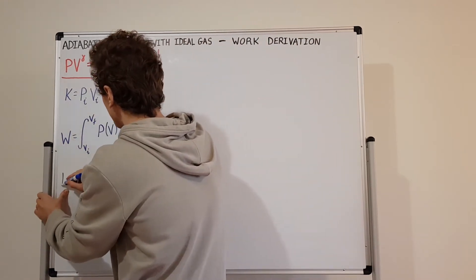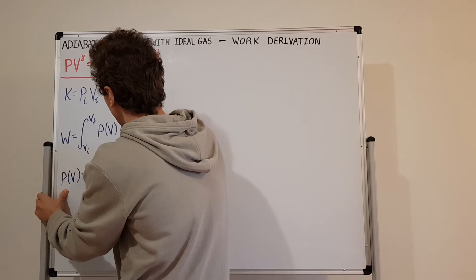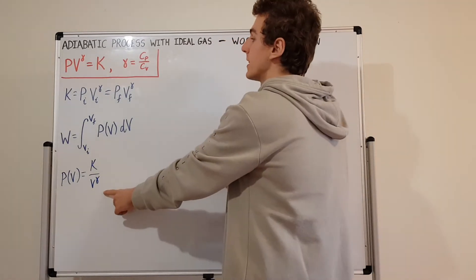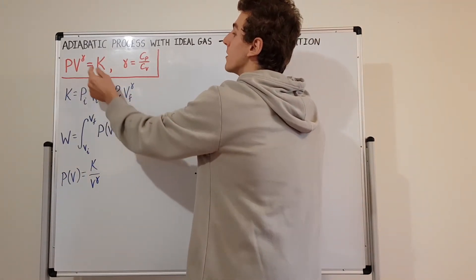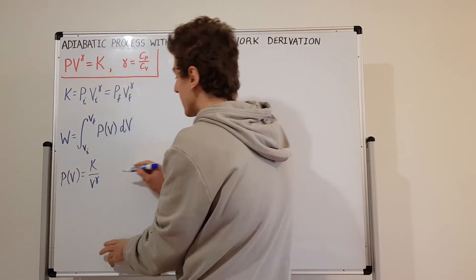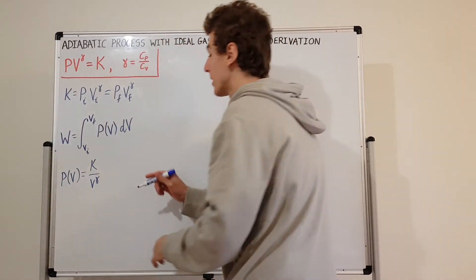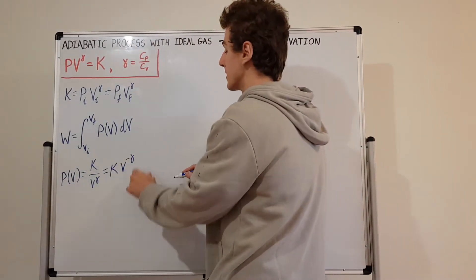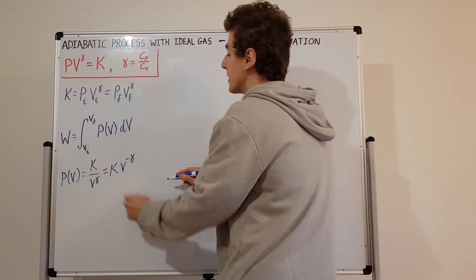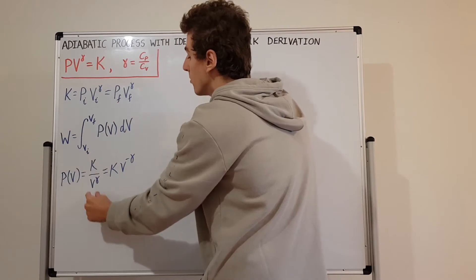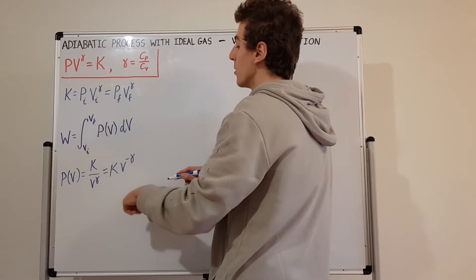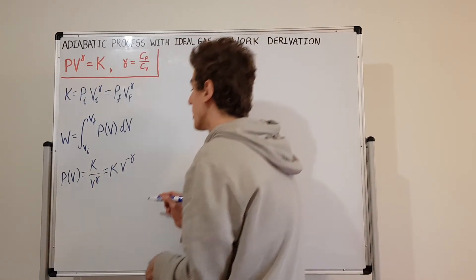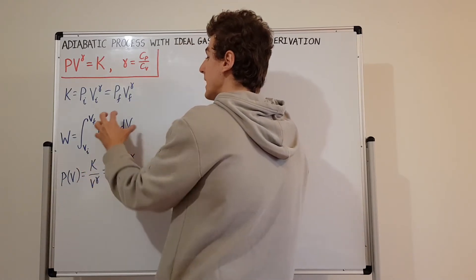We can go back to the adiabatic condition. The pressure as a function of volume is equal to K divided by V to the power of gamma. Using exponent laws, this is equal to K times V to the minus gamma, because 1 over V^gamma equals V^(-gamma) — the reciprocal gives a minus sign. So now we can substitute this into the integral.